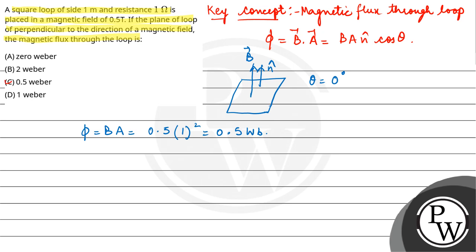So the final answer is option C, 0.5 Weber. Hope you understood it well. Best of luck.